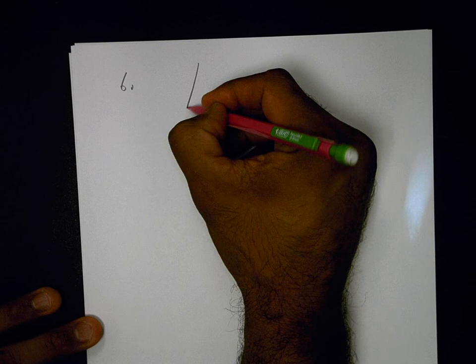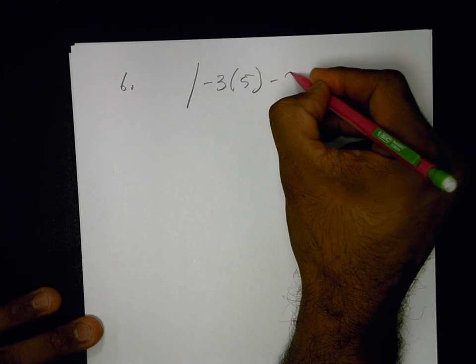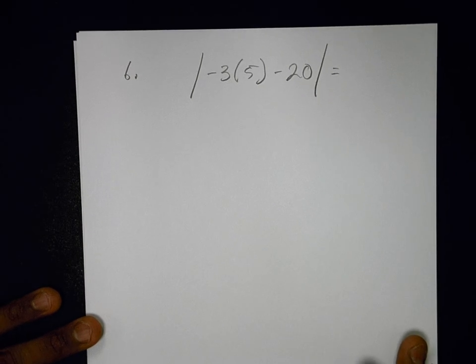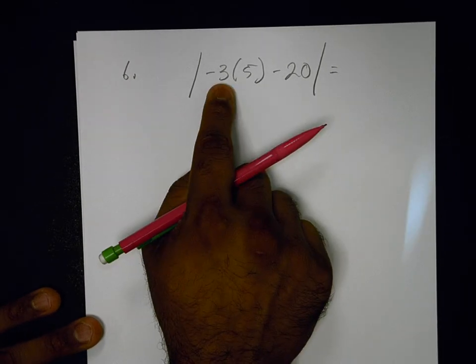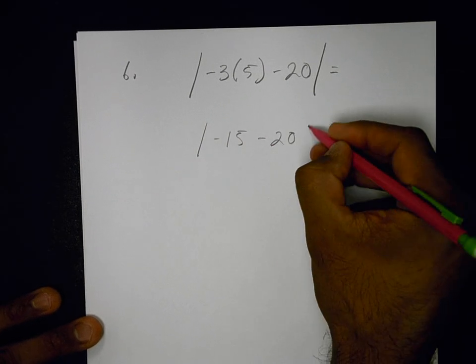Number 6 here. Same thing. Simplify inside the absolute value. Do order of operations. I'll multiply first. So that gives me negative 15 minus 20.